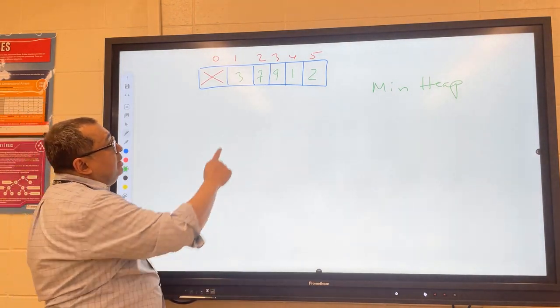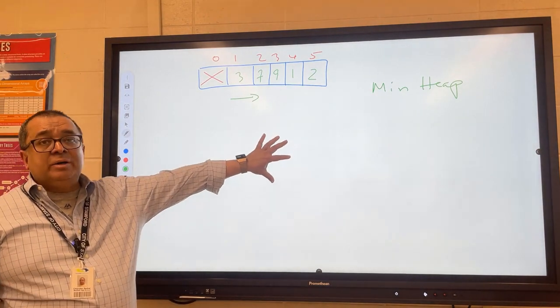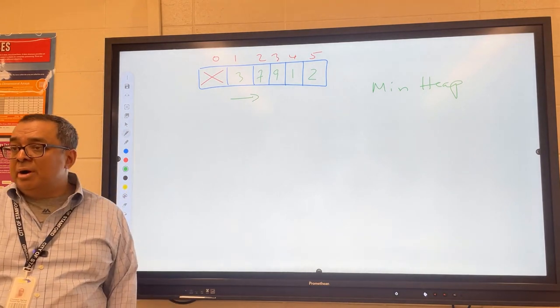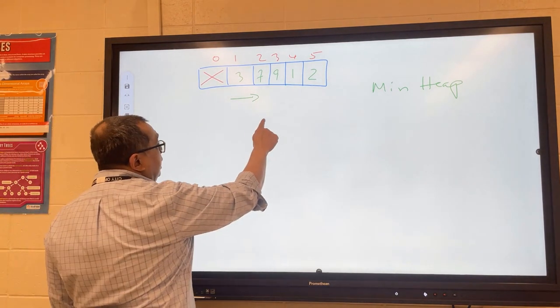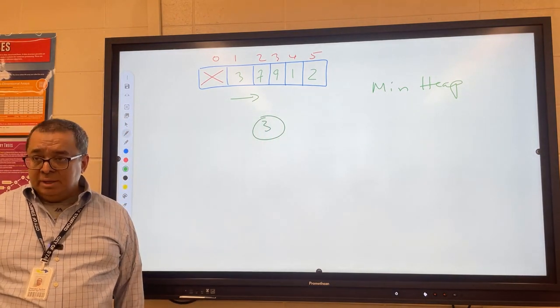We're going to go from left to right and insert into our heap. The first number we're going to insert is what number Mr. Moises? Three. We're going to insert the three and my question is, is that a valid heap? It is, so we're good there.